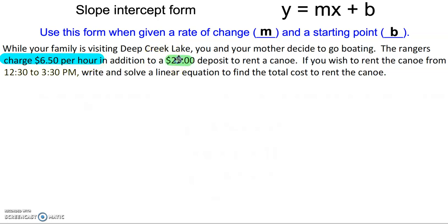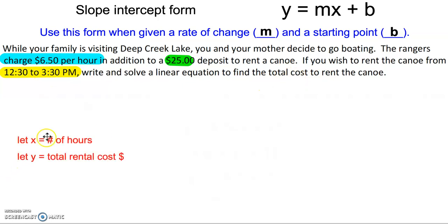In addition to a $25 deposit to rent a canoe. If you wish to rent the canoe from 12:30 to 3:30, write and solve a linear equation to find the total cost to rent the canoe. So the two things we're talking about here are the amount of time and the total cost. We're going to have our x and y represent the number of hours and the total rental cost.